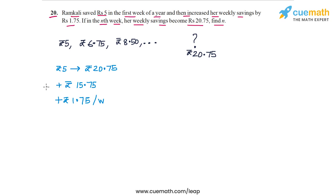So total increase is Rs. 15.75, increase per week is Rs. 1.75. So we just take the ratio of these two numbers and we get the ratio is 9. So it will take 9 additional weeks to go from Rs. 5 weekly savings to Rs. 20.75 weekly savings.